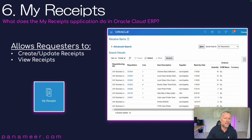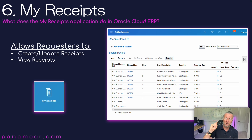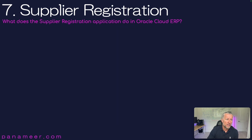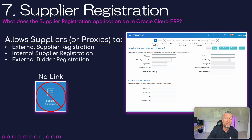Slide six: what does the My Receipts application do in Oracle Cloud ERP? We tease everybody by saying it's the most complicated application Oracle has, but it's really quite the simplest. It allows requesters — importantly, the person who created the requisition — to create and update receipts for those PO lines, and you can also view your receipts.